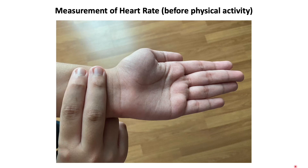Count the pulse for 15 seconds and record the pulse. Then multiply the amount by 4 to get beats per minute, which is the heart rate.